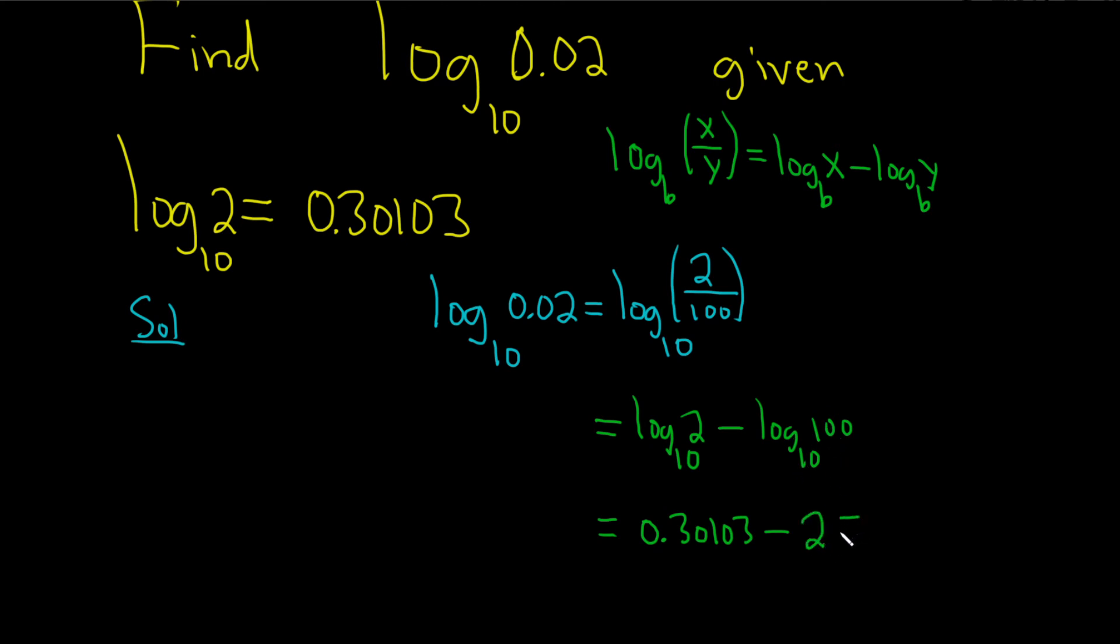Boom, there it is. And then I'll just go ahead and put this in my calculator. 0.30103 minus 2. So this is negative 1.69897.